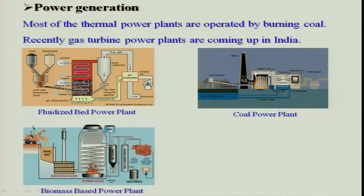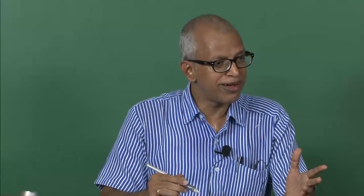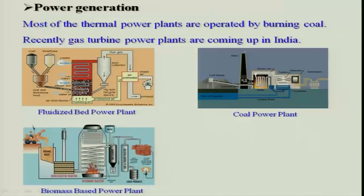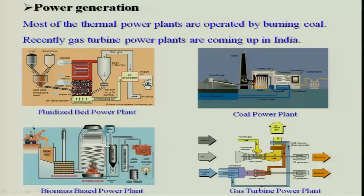There is also a biomass-based power plant, and there is a lot of problem with Indian coal — it contains large amounts of ash, which is a big challenge. Fluidized bed technology is required, and using a hybrid of coal and biomass together helps overcome that problem. Biomass is another way of generating power in a boiler. You can also combine a gas turbine with coal in a combined cycle to enhance system efficiency and reduce emissions.